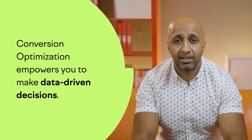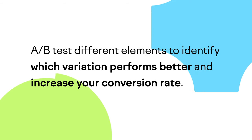Secondly, conversion optimisation empowers you to make data-driven decisions. By analysing user behaviour, conducting A/B tests, and tracking conversion funnels, you can identify areas for improvement and refine your PPC campaigns for better results. Let's say you start to notice a high exit rate on a particular PPC landing page — this indicates that visitors are leaving without engaging further. By A/B testing different elements such as headlines, images, or CTA placements, you can identify which variation performs better and increase your conversion rate. Ultimately, conversion optimisation enables you to personalise your PPC landing pages, tailoring content to individual preferences and behaviours to significantly boost engagement and conversions.